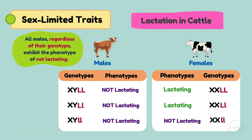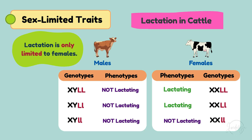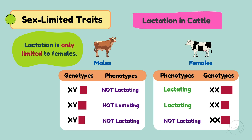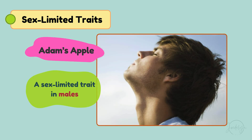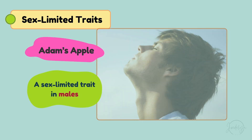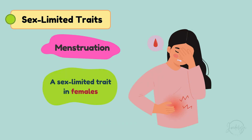This means that even if males carry the genes for lactation, they do not express this trait due to the lack of the necessary hormonal environment. Lactation is only limited to females. Other examples include Adam's apple, a sex-limited trait in males, and menstruation, a sex-limited trait in females.